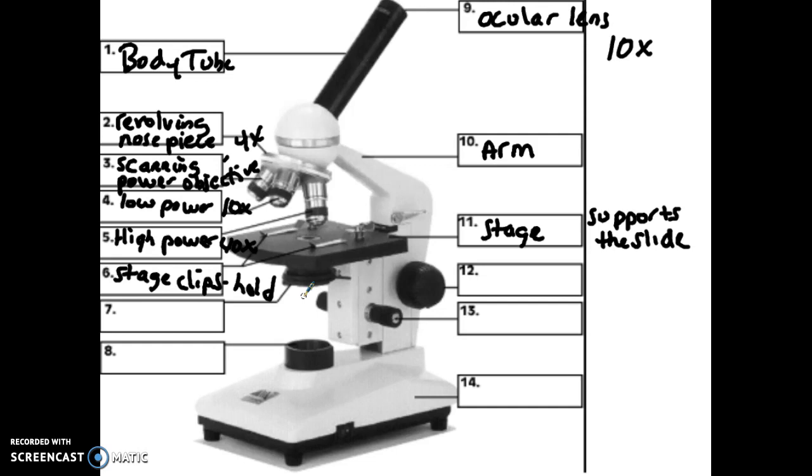So the two knobs over here, number 12 and 13, 12 is what's known as the coarse adjustment. Coarse adjustment, if you think of coarse in that spelling, coarse is like sandpaper, rough. It has a larger degree of movement when you move this coarse adjustment knob. And what that does is it's going to focus.